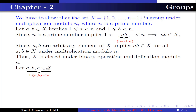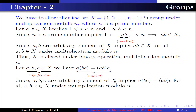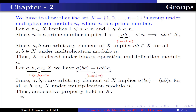Let a, b, c belong to X, where 1 ≤ a, b, c < n. We have a(bc) = (ab)c under multiplication modulo n. Since a, b, c are arbitrary elements of X, this implies a(bc) = (ab)c for all a, b in X under multiplication modulo n. Thus the associative property holds in X.